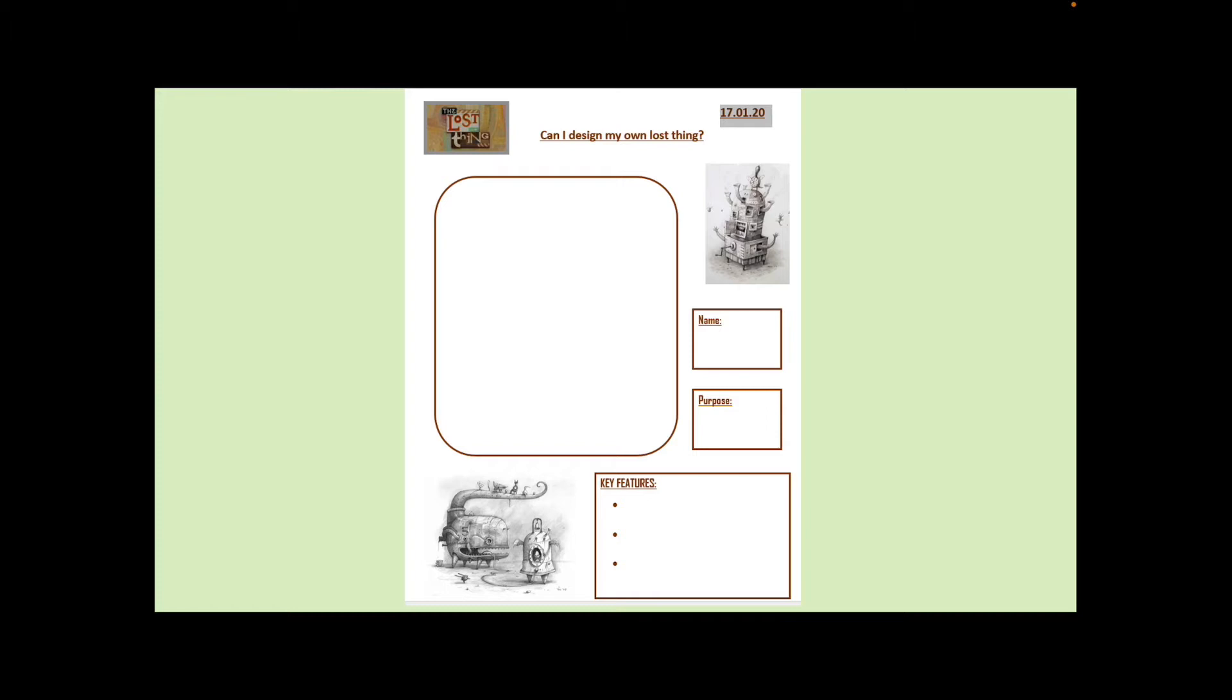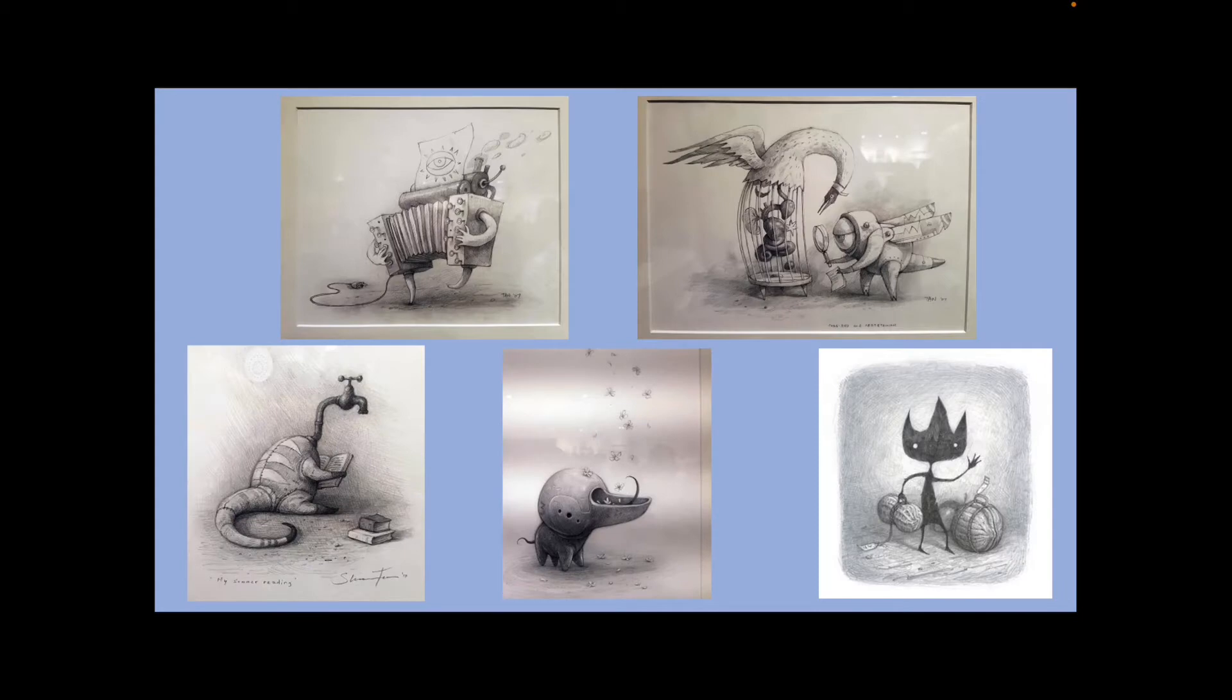So if you can just do this on a blank piece of paper or in your English book on the next clean page and as long as you include those bits of information, that will be fantastic. Now, on the next few pages, these are some of Sean Tan's sketches of some lost things that he maybe didn't put into the book. I think some of them he did put into the book. So you can just have a look at these.